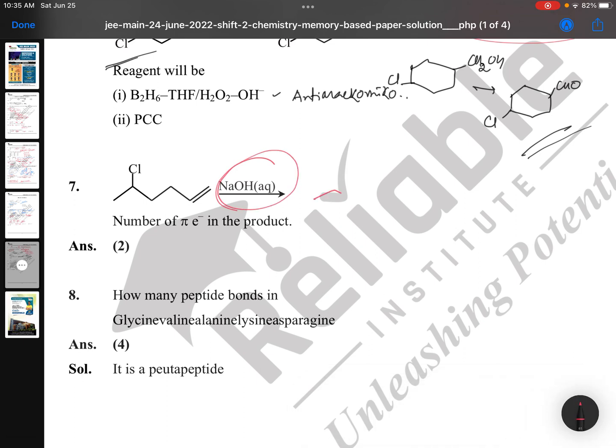NaOH aqueous, nothing special. If it is converted into any real end product or cyclic product, because of this double bond it may convert into some cyclic product. Whatever it is, number of pi electrons in the product will be two. Again simple, aqueous NaOH just to remove this chlorine and it will become OH.